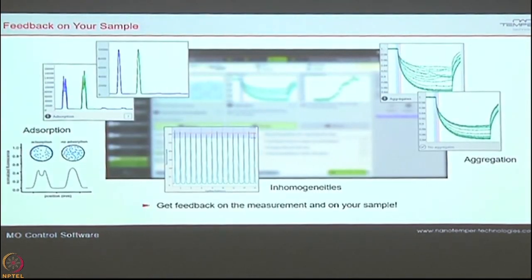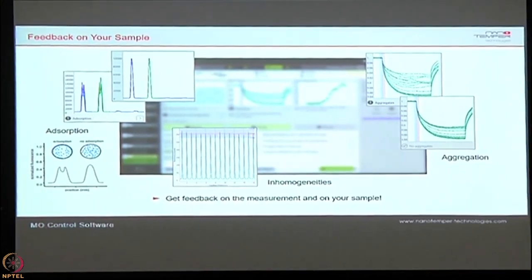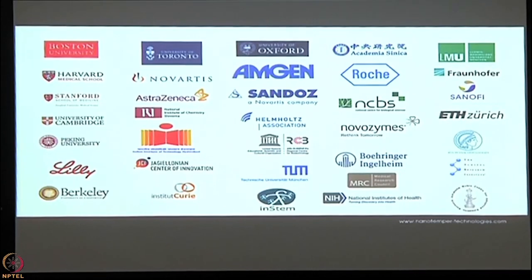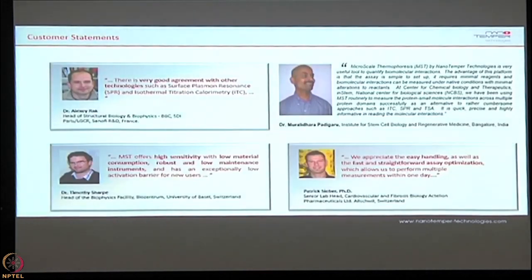The software is completely artificial intelligence driven — it gives you suggestions at the end on how you need to move on. We are already associated with top premium institutes across the globe, and in India we are associated with IIT Hyderabad, RCB, Novozymes, and many other customers using this technology. In all major journals you can find MST papers — in Nature we have more than 15 papers — and the best journals have acknowledged MST as a very useful biophysical tool for measuring binding affinities.